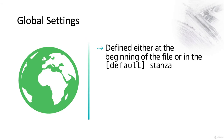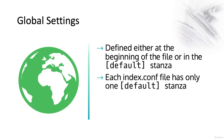The global settings are defined at the beginning of the file or in the default stanza. Each indexes.conf file only has one default stanza. These are the settings that apply to all indexes across the entire Splunk environment.